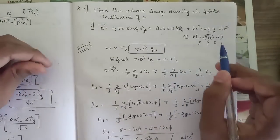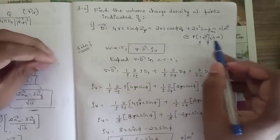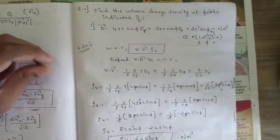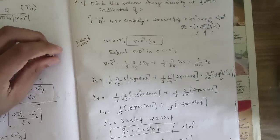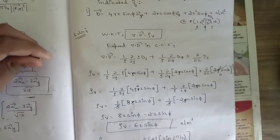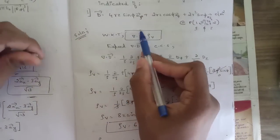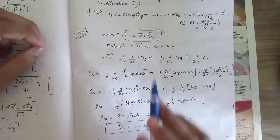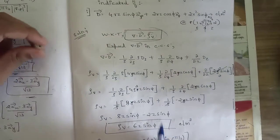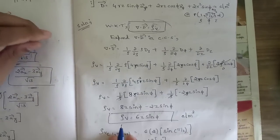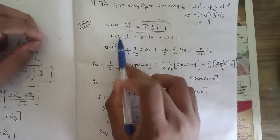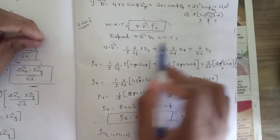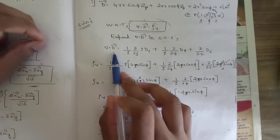The point P = (1, π/2, 2) gives ρ=1, φ=π/2 (which is 90°), and z=2. We use the relation del·D = ρv, so we need to find the divergence. We expand del·D in the cylindrical coordinate system.